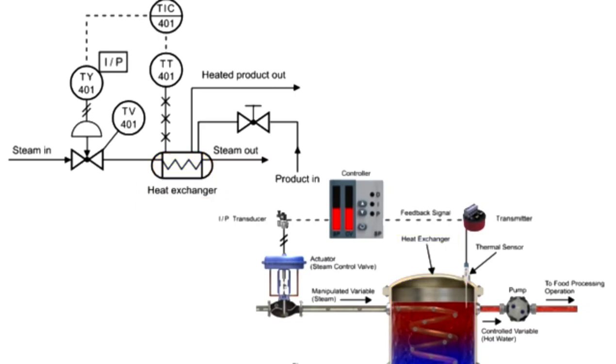To read the control loop, a series of steps are performed. Identification of the control loop is notated by the tag number 401 within the balloons.